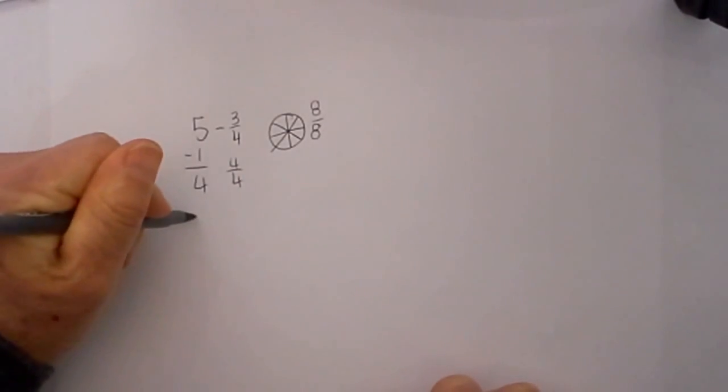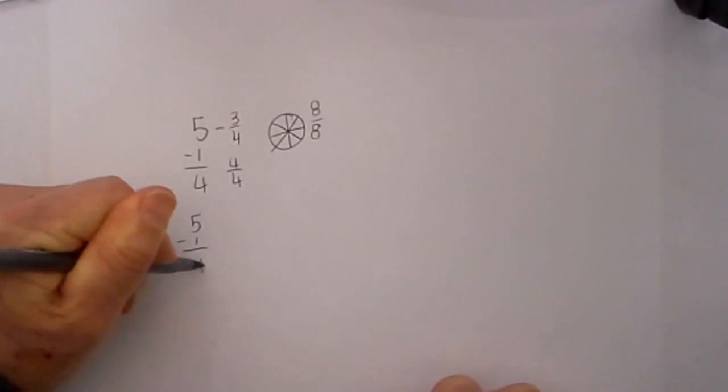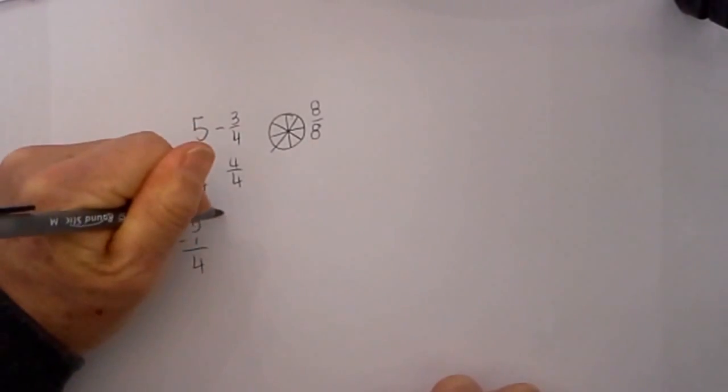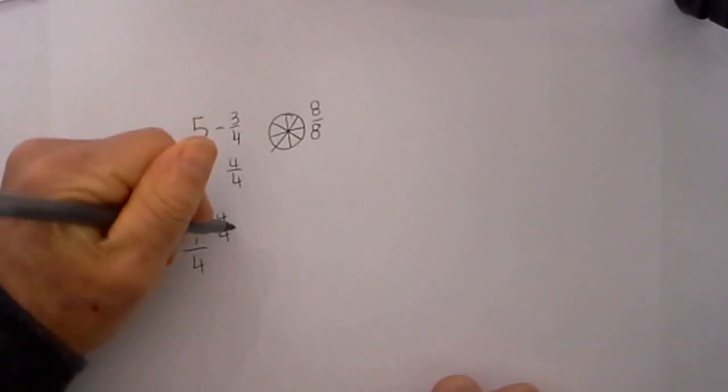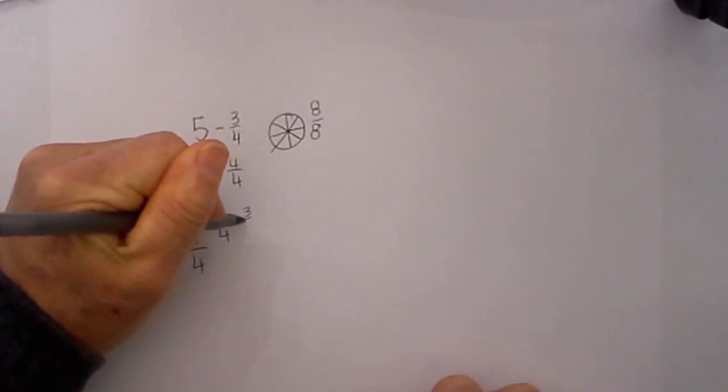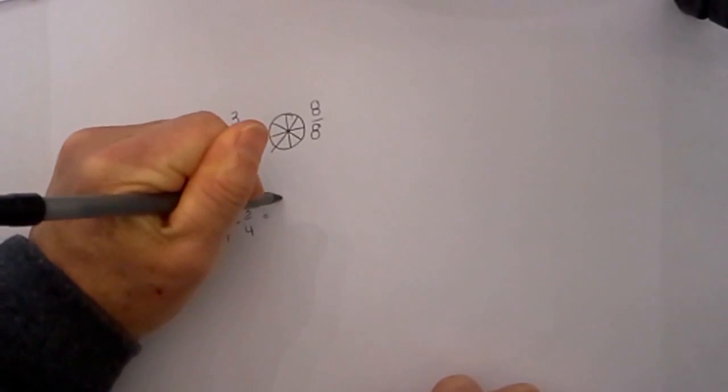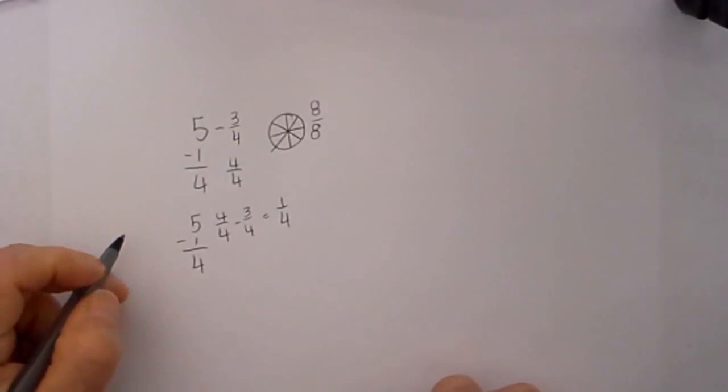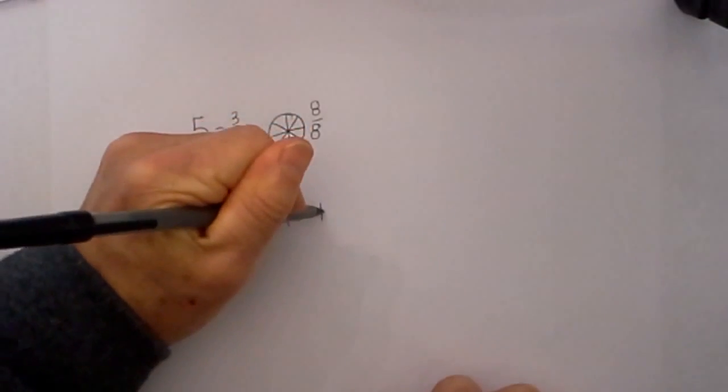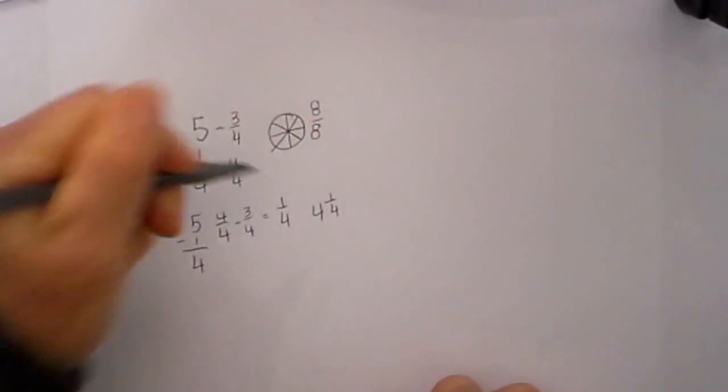So let's rewrite this so it is not so messy. It will be 5 minus 1 equals 4. We will rewrite the 1 as 4 over 4 minus 3/4 equals 1/4, because they have the same denominators, so you can subtract. It becomes 4 and 1/4.